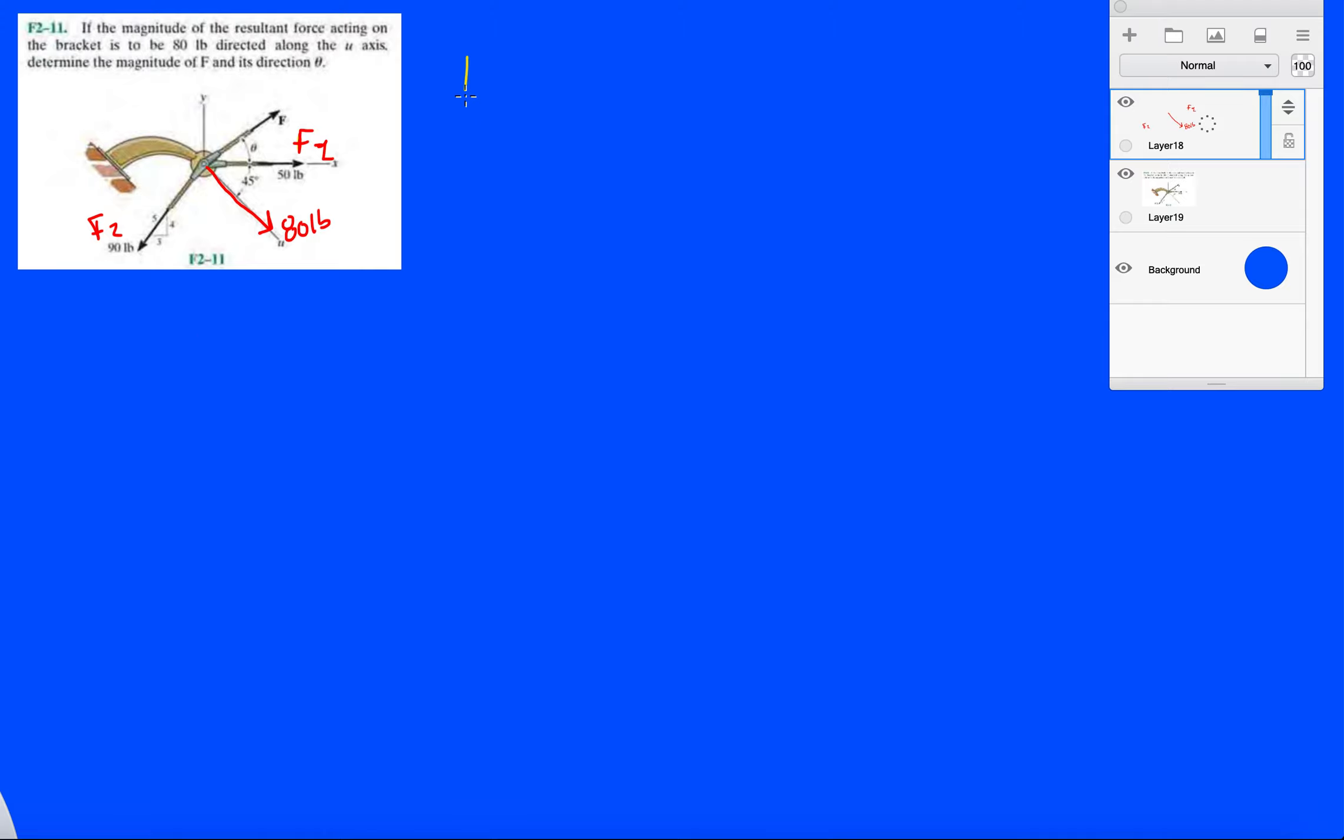Okay, so let's do F. Force F is unknown, but we know that in the x direction, it's going to go F cosine theta i plus F sine theta j. Okay, so we know it's going up and to the right, so positive, positive.